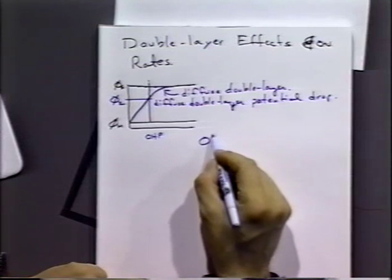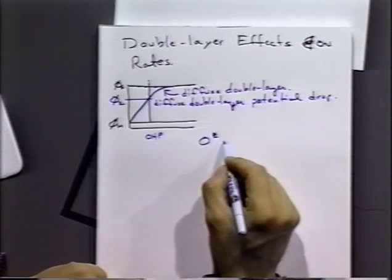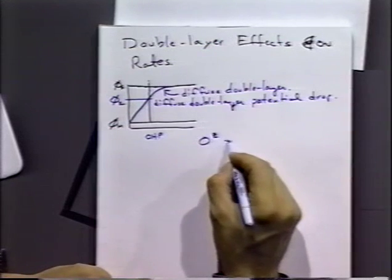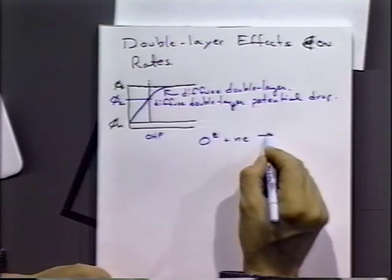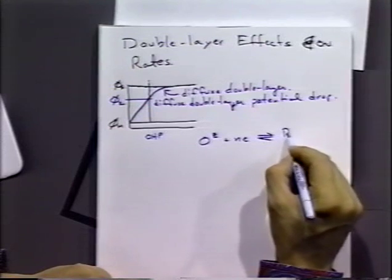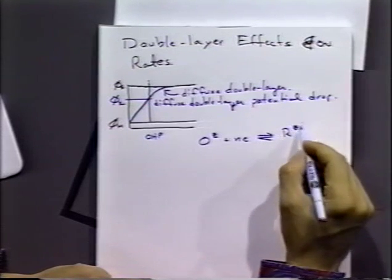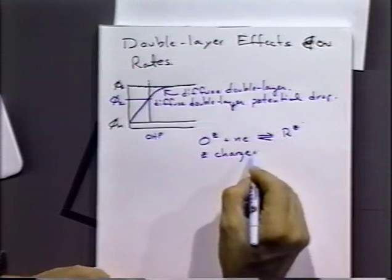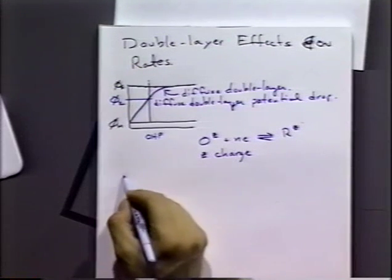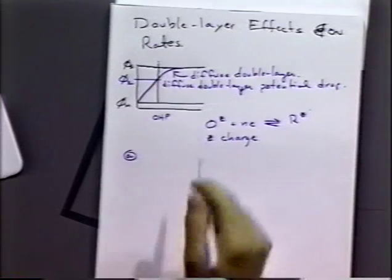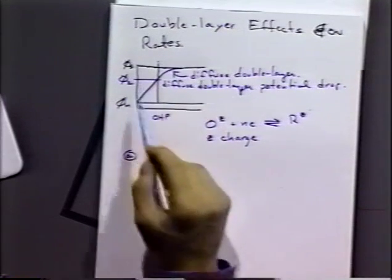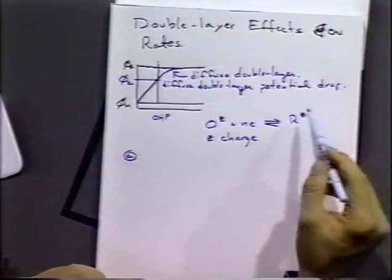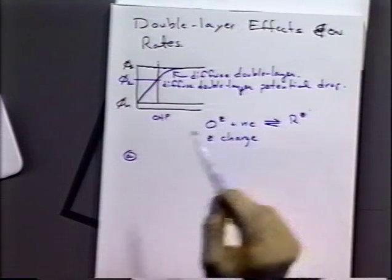Now if we have a molecule that has a charge on it — let's call that charge Z — so O could be O2-plus or O1-plus plus nE, where Z is the charge on the species. Since we have this phi-2 effect, there's going to be some effect on the electrochemistry of this charged molecule.